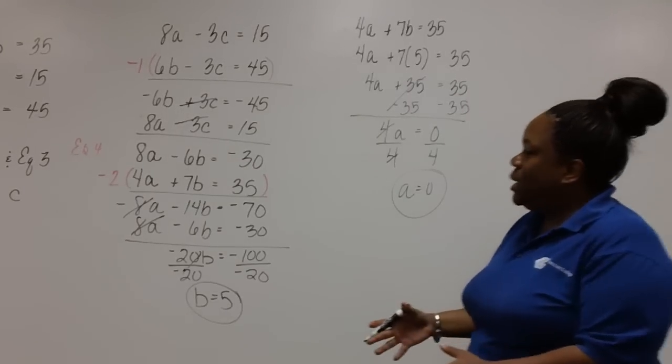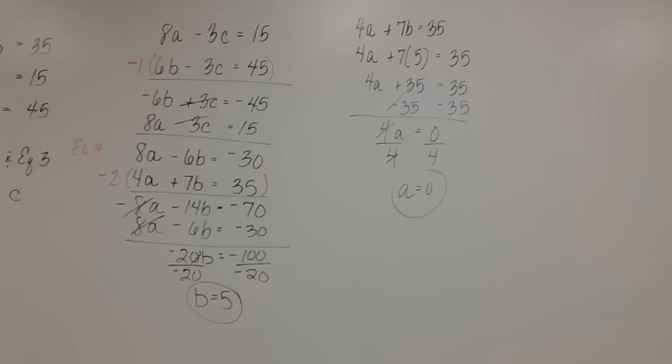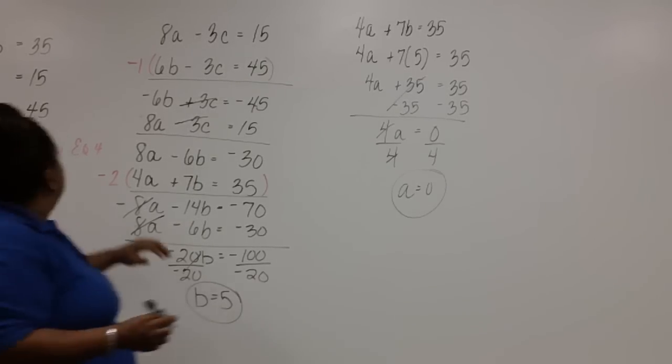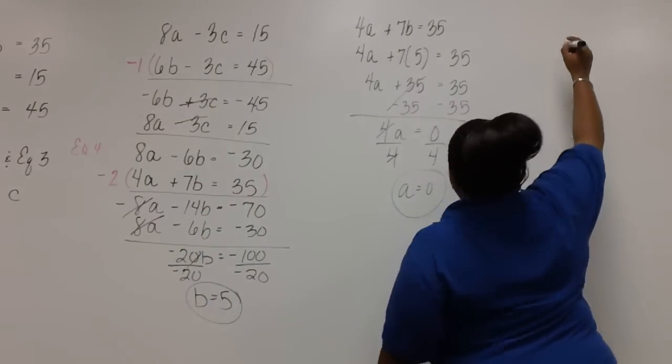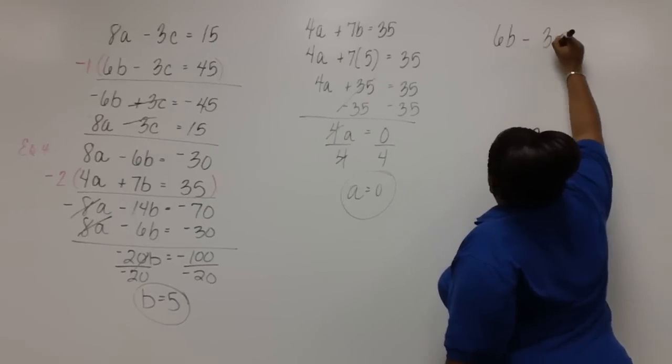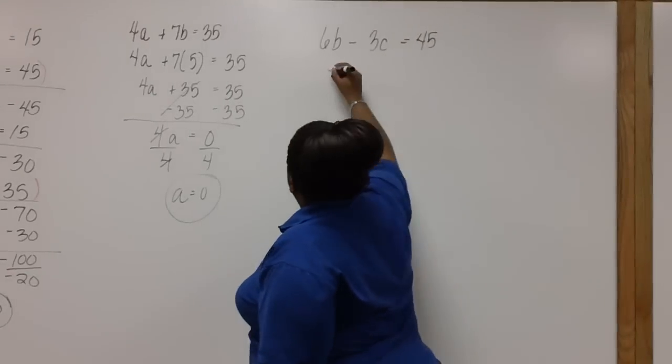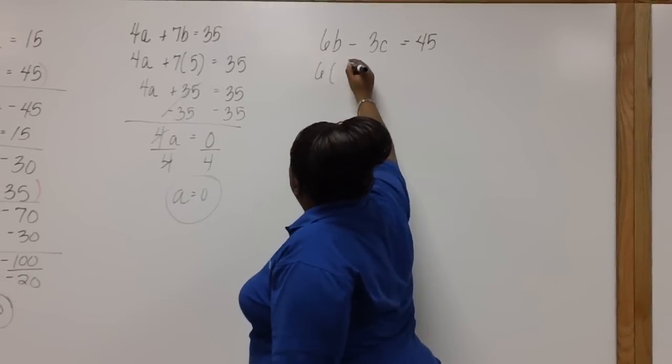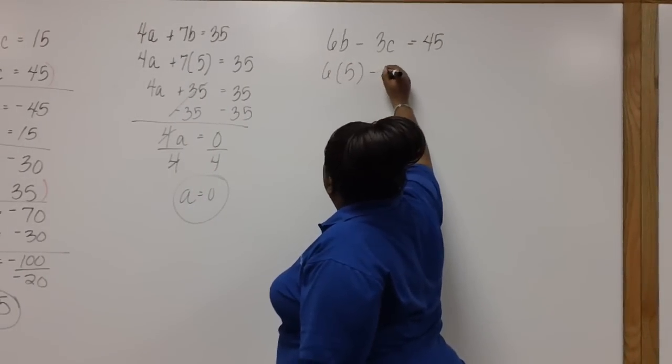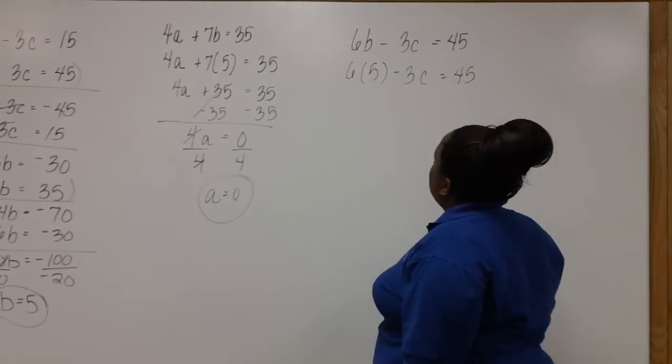Now we just need C. So we can choose any of these equations that have a C in it. I'll choose equation three. So in place of B, we'll put five. And then we just need to simplify.